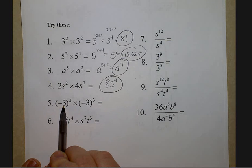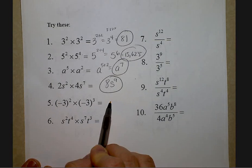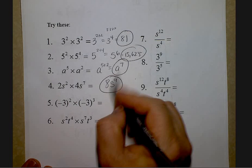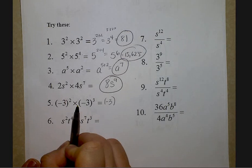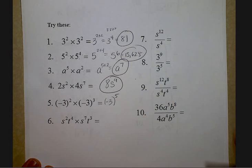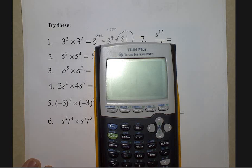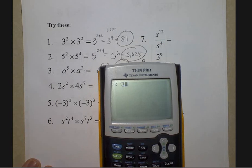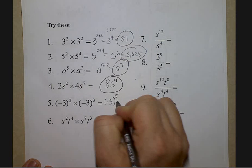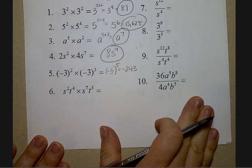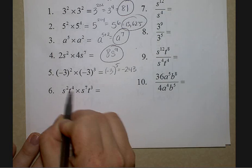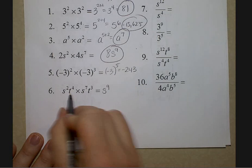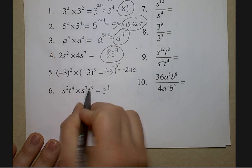If something is in parentheses, when you rewrite it, it must remain in parentheses. So negative three — multiplying, same base — we add exponents to the fifth. Now grab the calculator. It was in parentheses so it must remain in parentheses. Negative three to the fifth power is negative 243. For the sixth one, I have s's and I'm multiplying — same base and multiplying, I add — it's s to the ninth. Same base t's and I'm multiplying: t to the seventh.